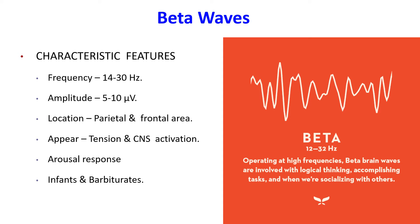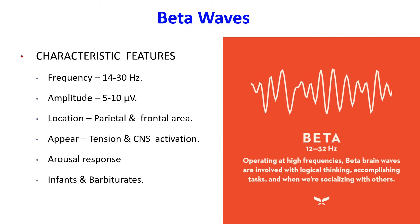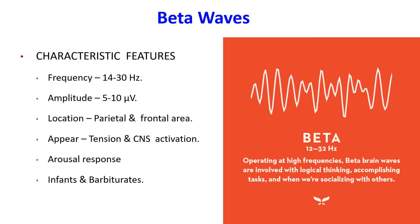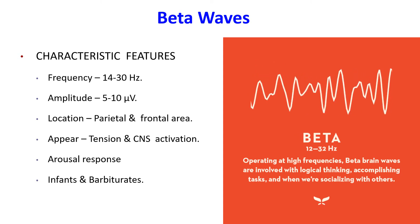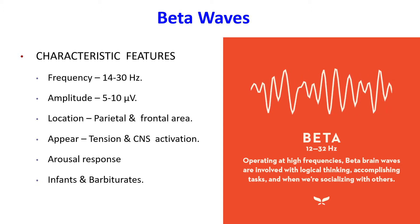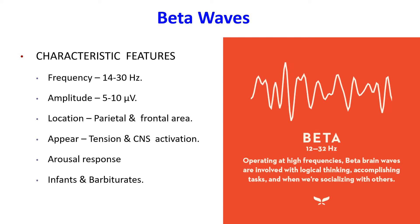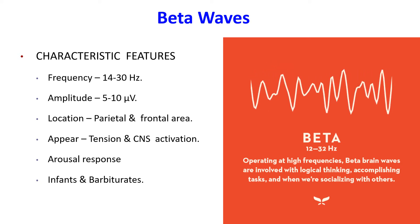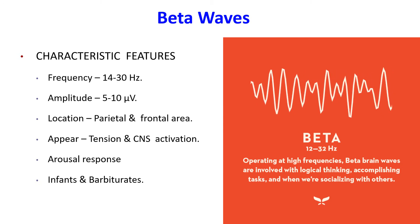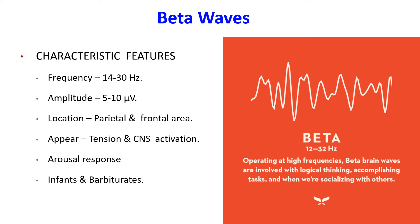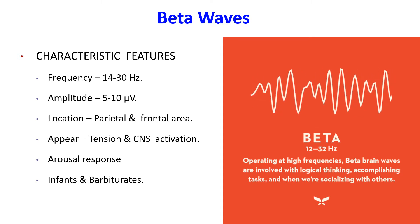Beta waves have the highest frequencies, usually between 14 to 30 cycles per second. Amplitude is much lower than alpha waves, at 5 to 10 microvolts. They are recorded from the parietal and frontal areas. Beta waves are seen in tension and when the central nervous system is activated. Infants have fast beta-like activity, and barbiturates induce beta activity typically at a frequency of 18 to 24 Hz.